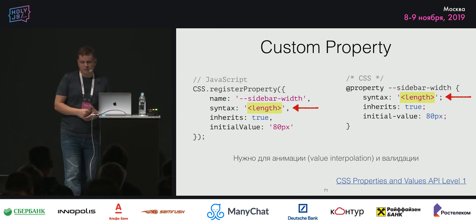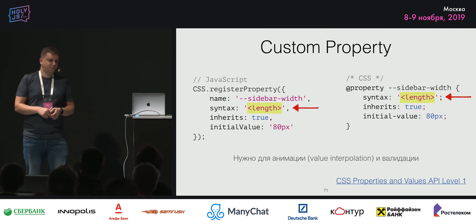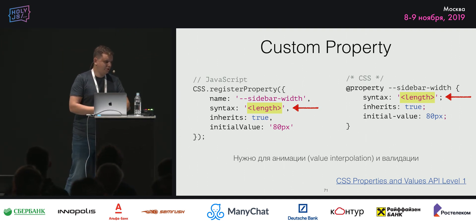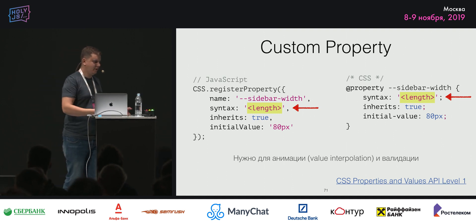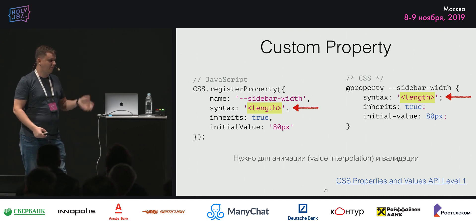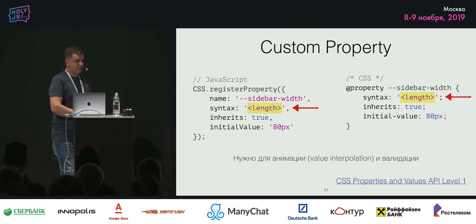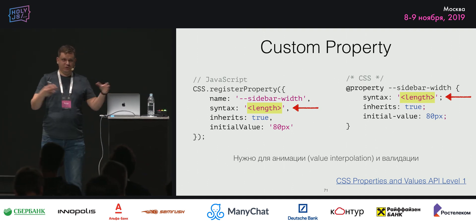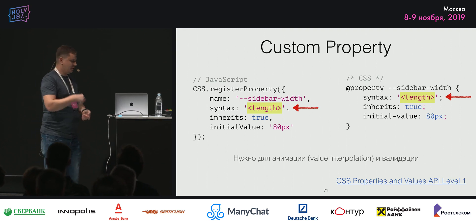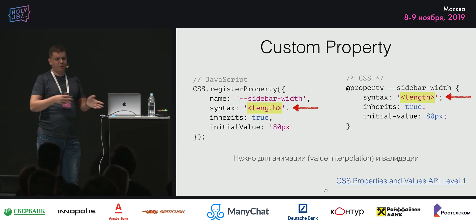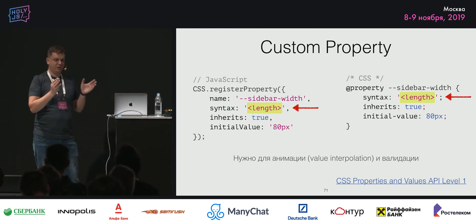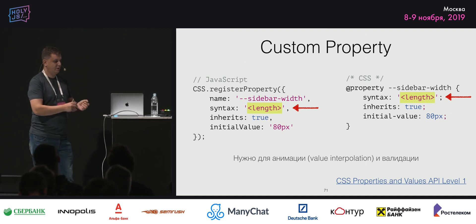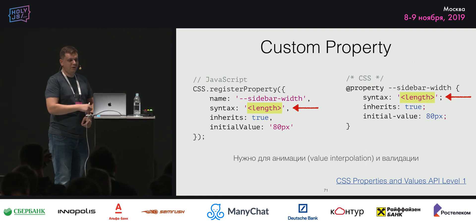CSS Houdini состоит из нескольких спецификаций и позволяет расширять CSS с помощью JavaScript. Например, для задания синтаксиса custom property. Уже в Chrome появился метод CSS.registerProperty(), которому можно задавать для определённых имён custom property синтаксис — например, что это length. Также можно задать значение по умолчанию. Это нужно для анимации: когда используется custom property и браузер не знает тип значения, он не может его интерполировать. Когда говорим, что это length — браузер знает, как её интерполировать, и анимация работает. То же самое предлагается внедрить и в CSS через новый @property.